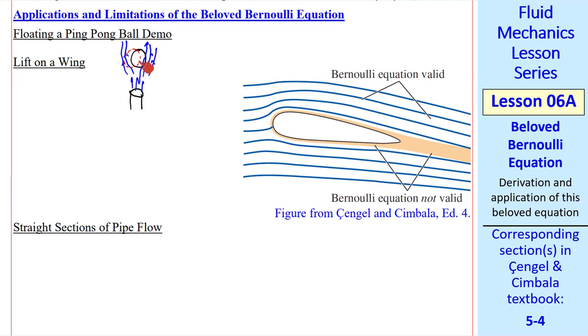Beloved Bernoulli tells us that the pressure here will be lower, since the velocity is higher. That will provide a restoring force that brings the ball back. Now consider lift on a wing. Here's a two-dimensional wing.